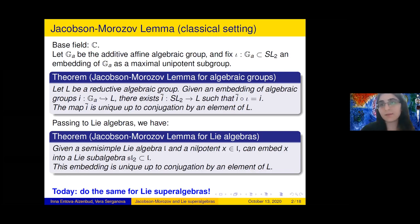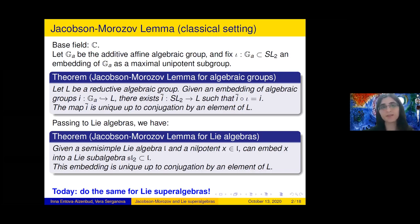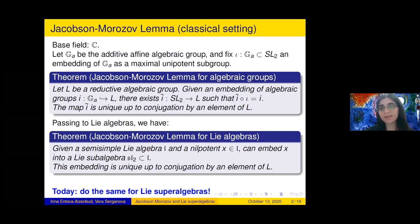This algebraic group can be embedded into the algebraic group SL2 as a maximal unipotent subgroup, and we fix such an embedding. Then the Jacobson-Morozov lemma for algebraic groups tells us the following: if we have a reductive algebraic group L and an embedding of the additive group G_A into L, then we can extend this embedding to an embedding of SL2, unique up to conjugation by an element of L.